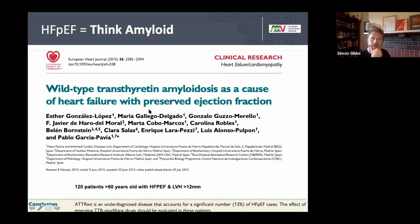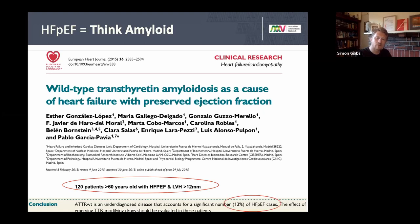A Spanish study — reproduced several times — looked at people over the age of 60 with HFpEF and left ventricular hypertrophy of more than 12 millimetres. They found that in 13% of those cases — one in eight — patients actually had amyloidosis. So if you have anyone with a thickened wall and HFpEF, you really need to consider amyloidosis and proceed to bone scintigraphy.